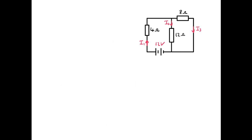Okay, here's my solution. If you look at the junction at the top, you can see I1 is going into that junction and I2 and I3 are going out. So we can state that I1 is equal to I2 plus I3.